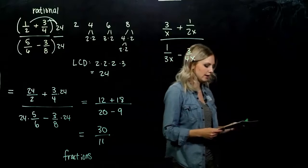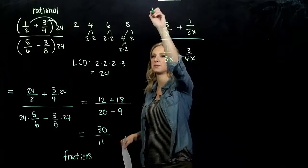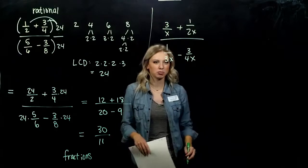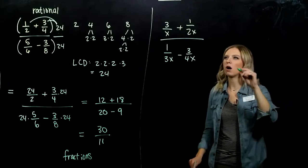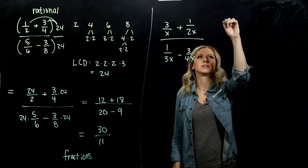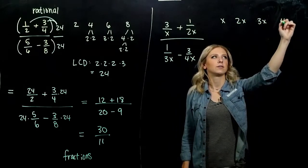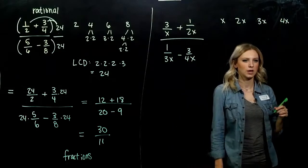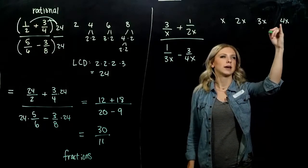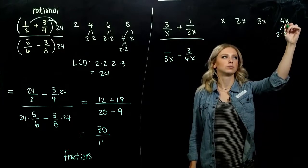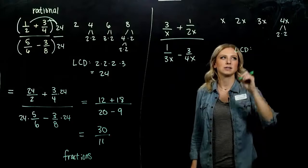Let's look at a similar example, but now we've got some variables involved — a little bit more to pay attention to, but the same story. What are each of my denominators? I have x, 2x, 3x, and 4x. Breaking those into their primes: x is already broken down, 4 consists of 2 times 2, and we also have that factor of x.